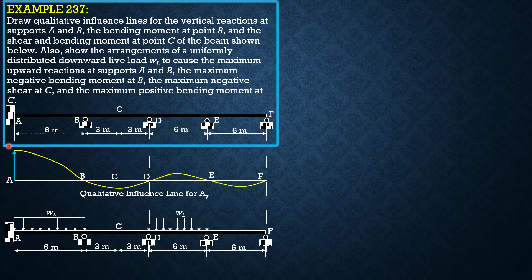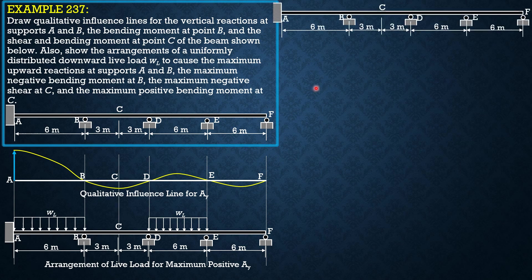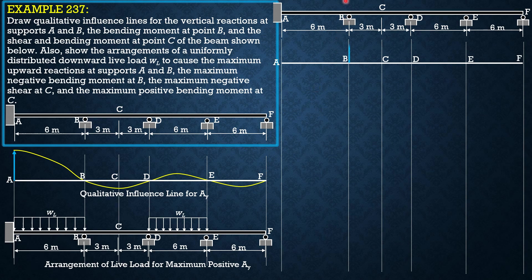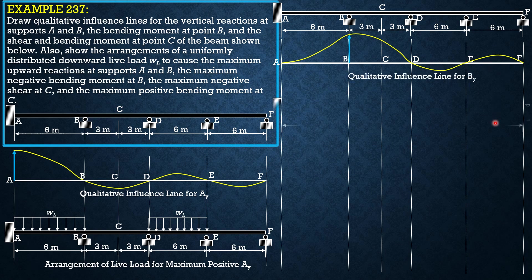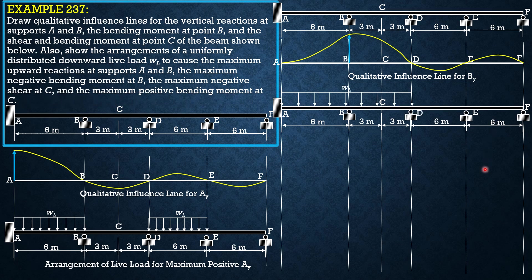Next, for B. For B, we have to push B upward, and this will be the expected deflected shape. Therefore, to maximize the positive upward reaction at B, we load portion ABCD with uniform live load as well as EF as shown in the figure. That's the arrangement of live load for maximum positive reaction at B.